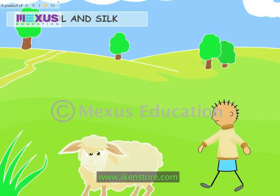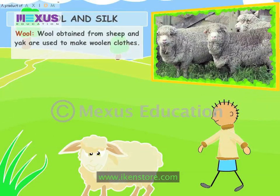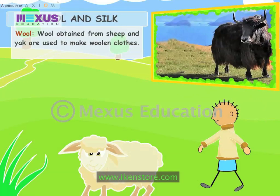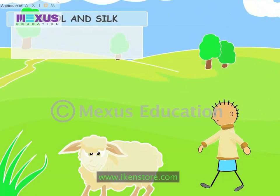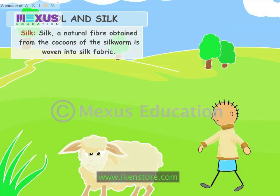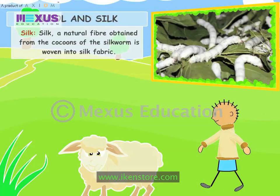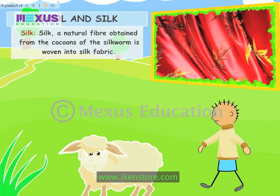Wool obtained from sheep and yak is used to make woolen clothes. Silk is a natural fiber obtained from the cocoons of the silkworm and is woven into silk fabric.